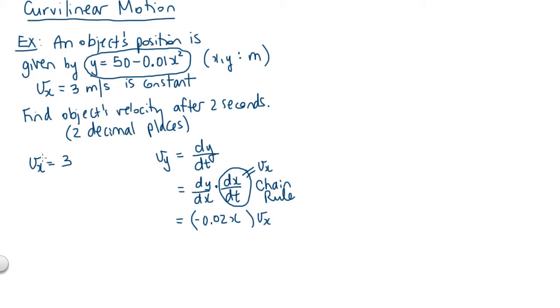We can multiply by vx there and start to simplify. We know that vx equals 3 throughout this problem, so we might as well say this is 3. So negative 0.06x is what we've got here. The problem now comes down to figuring out what x is equal to.